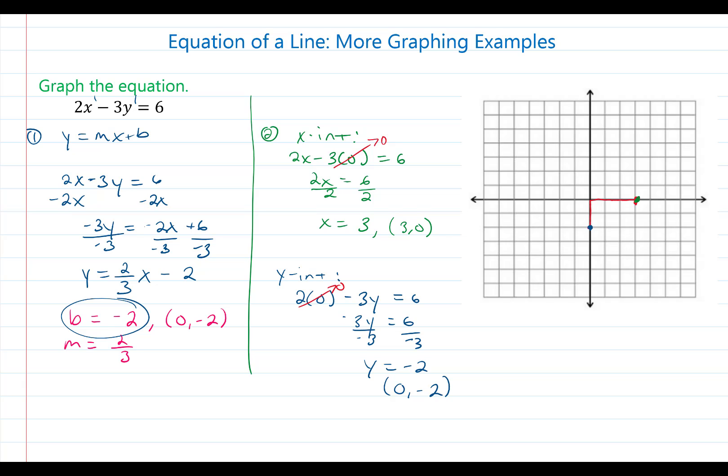So regardless of which strategy you use we still have two points on the line. Which now we can create our line with arrows on the ends to indicate that it does go to infinity. Alright guys good luck.